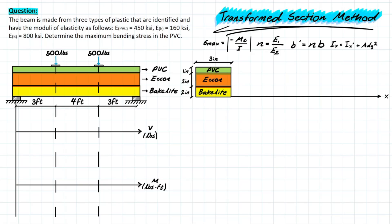The question goes as follows. We have a beam made up of three different plastics. One of them is PVC with a modulus of elasticity of 450 KSI. The Escon is 160 KSI, and we have Bakelite which is 800 KSI. It wants us to determine the max bending stress in the PVC, meaning it wants us to find whatever the bending stress is in this very top fiber here.